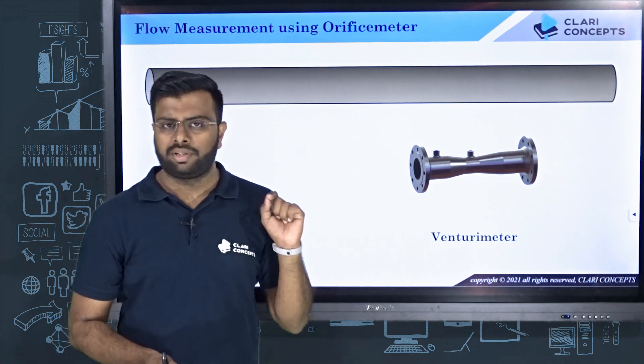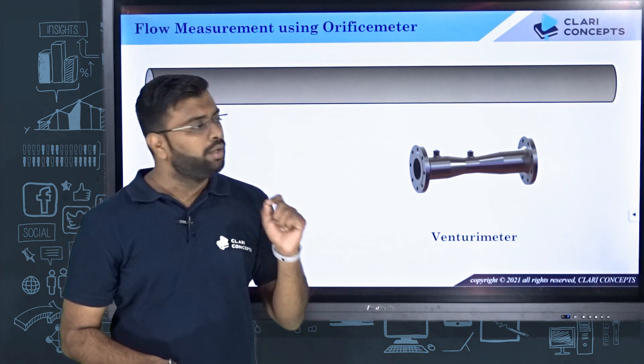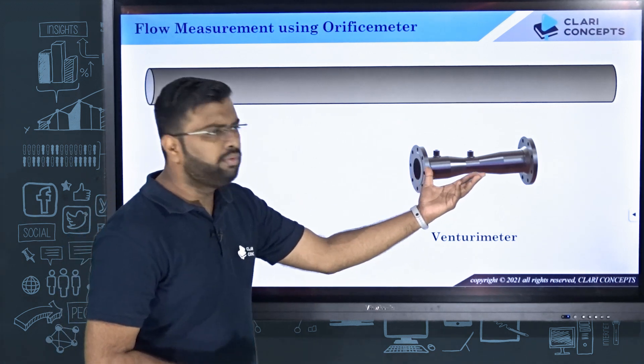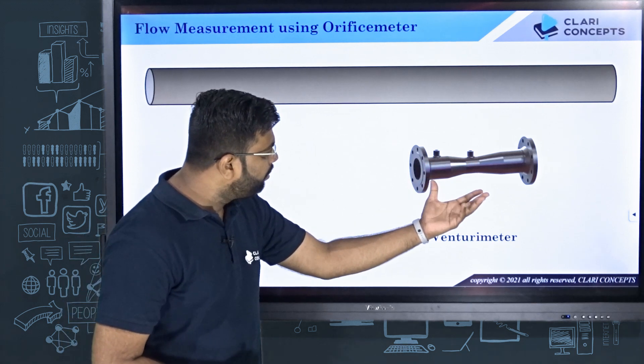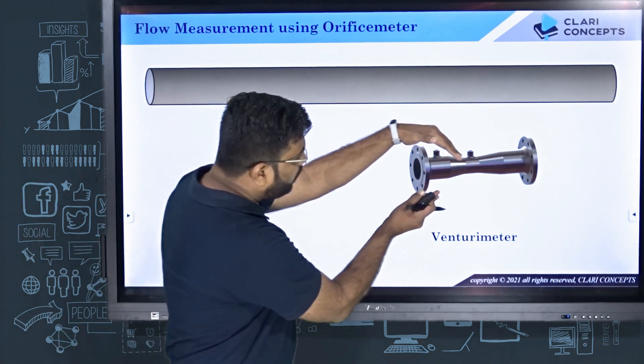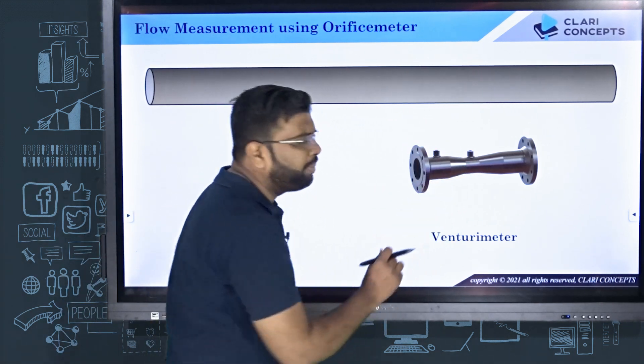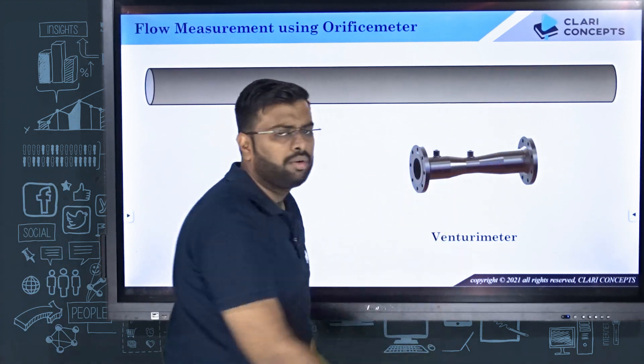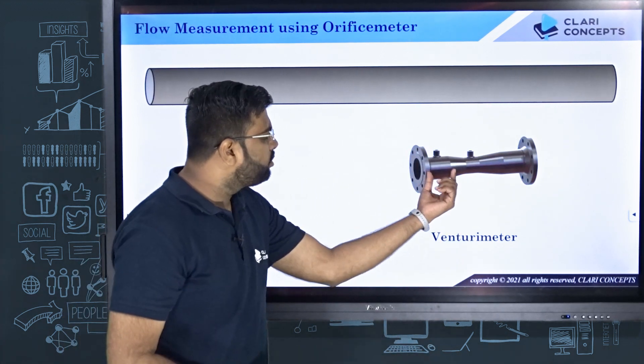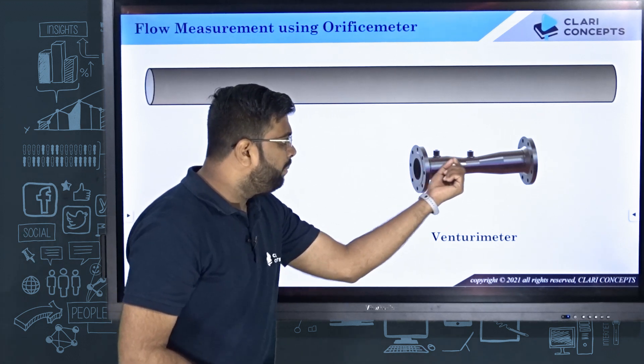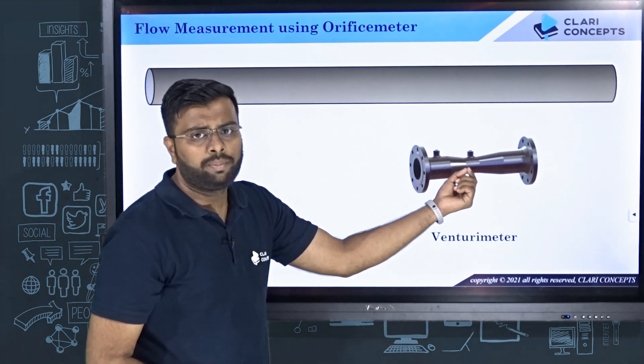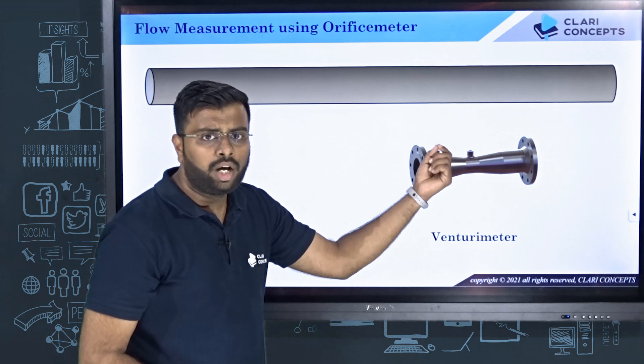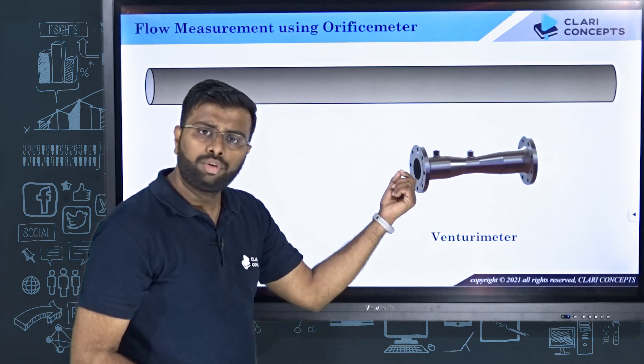There is an alternative to this. If you look at venturimeter, we have simply changed the cross-sectional area for a smaller length of pipe. We have reduced the area and then again increased the area to the mean diameter of the pipe. With this, the velocity and pressure had internal conversion, and we monitored that to calculate the velocity flowing through the pipe.